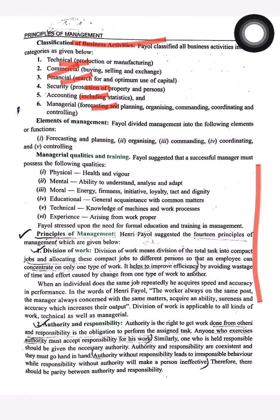He described the elements of management and divided them into the following functions: Forecasting and Planning, Organizing, Commanding, Coordinating, and Controlling.